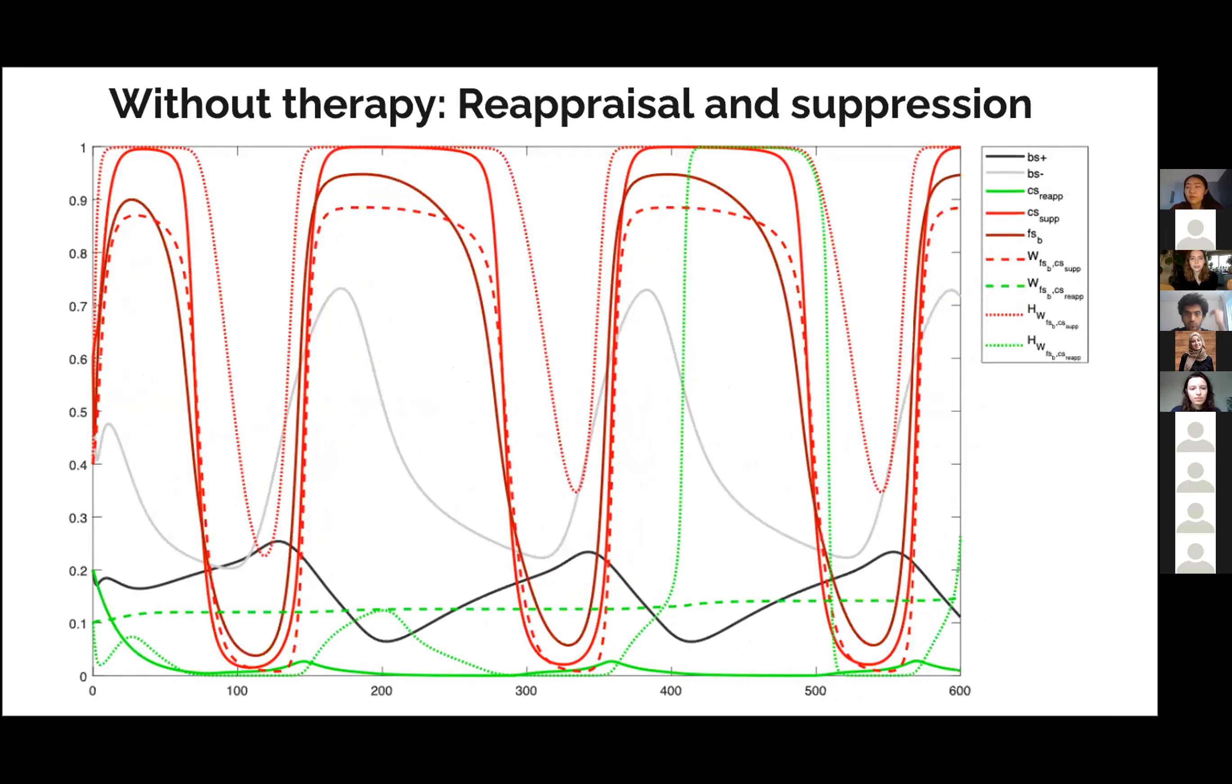And here we see the reappraisal and suppression. So with those mood swings, the suppression goes up and down. This person really uses suppression to deal with emotions, while the reappraisal stays pretty low over time, and it's always lower than the suppression. So the person is not very likely when he or she feels bad to reappraise thoughts and more likely to suppress negative thoughts.